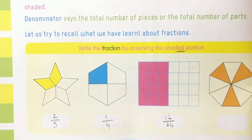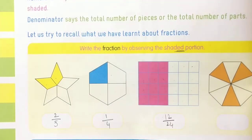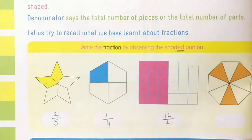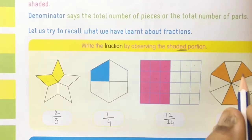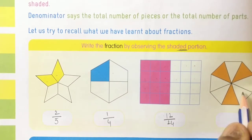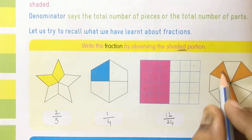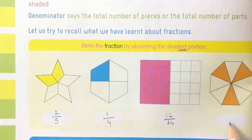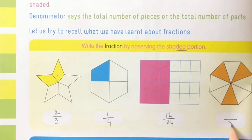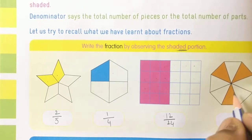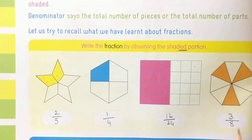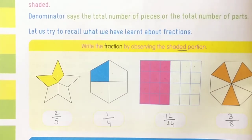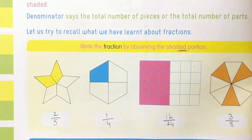Ok children, do you understand? Now come to the next one. How many parts do you have? One, two, three, four, five, six, seven, eight — total eight parts. How many are shaded? One, two, three — three parts are shaded. So the answer is three by eight.